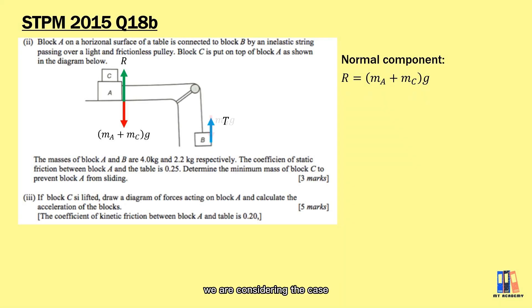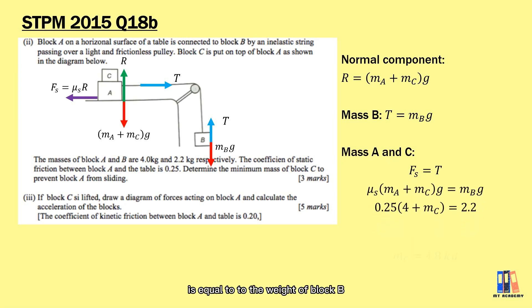For now, we are considering the case that block A is not moving, so the forces should be in equilibrium. At block B, tension in the string will be equal to the weight of block B. And then on block A and C, we have the friction equal to the tension in the string, which is also equal to the weight of block B. Putting in the formula and the values given, we can obtain the minimum mass of block C is equal to 4.8 kg to prevent block A from sliding.